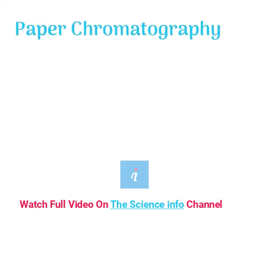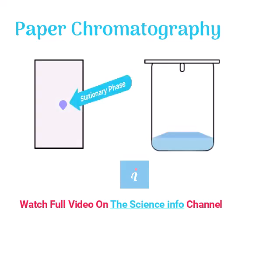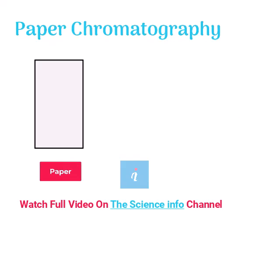In paper chromatography, moisture present in the pores of filter paper acts as the stationary phase. Organic solvents such as ether and ethanol are used as the mobile phase. The sample is first spotted on the paper with a pipette.